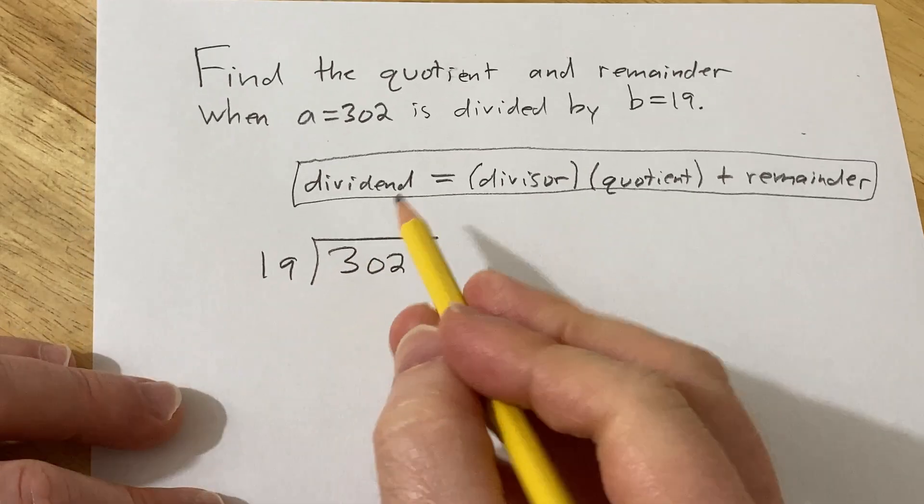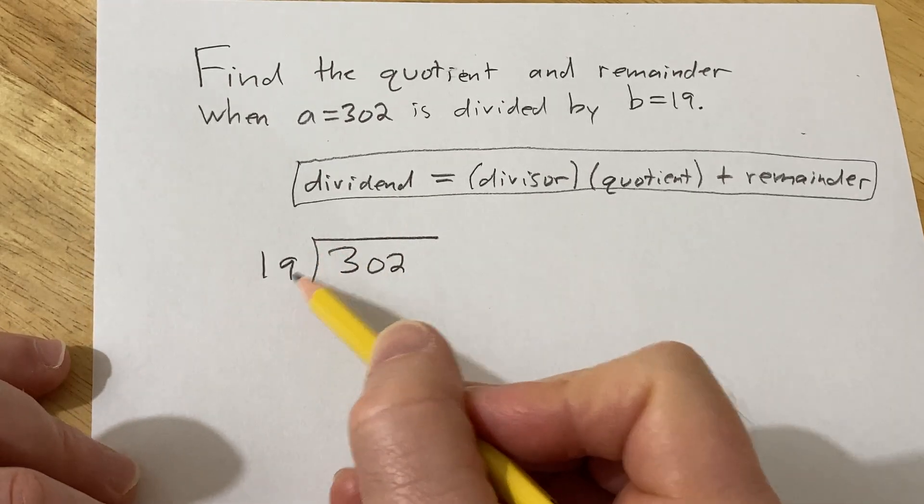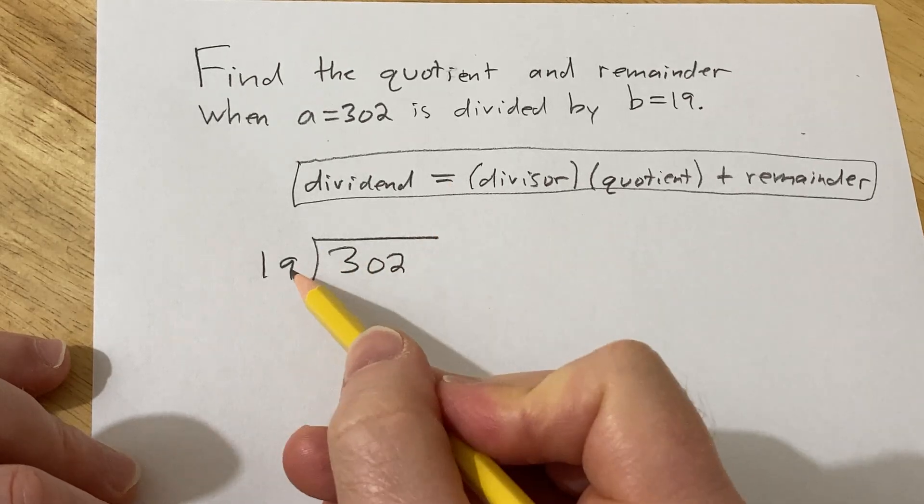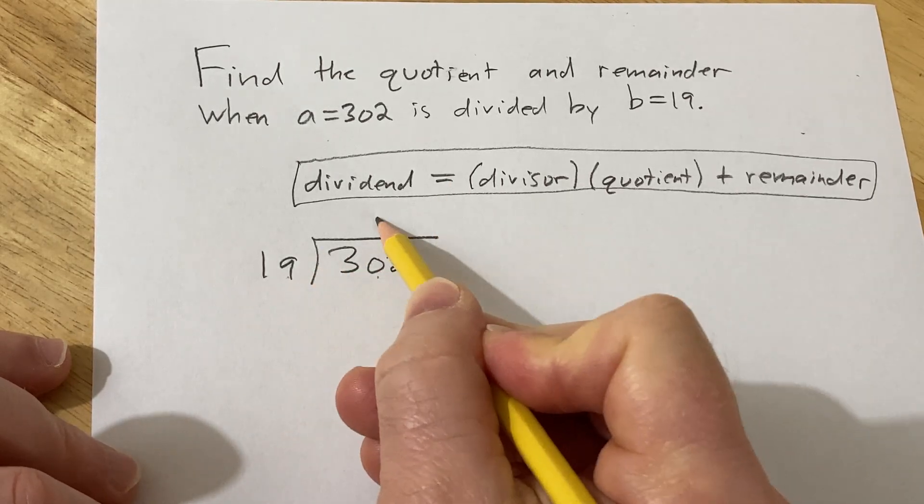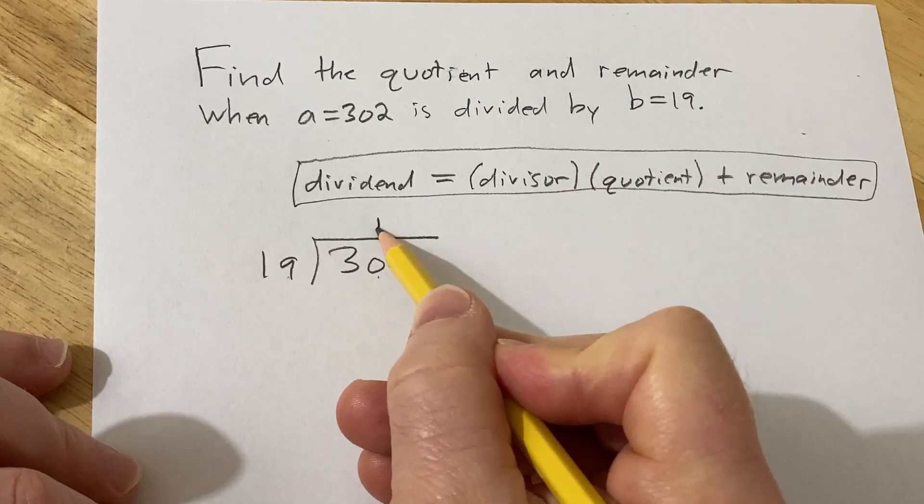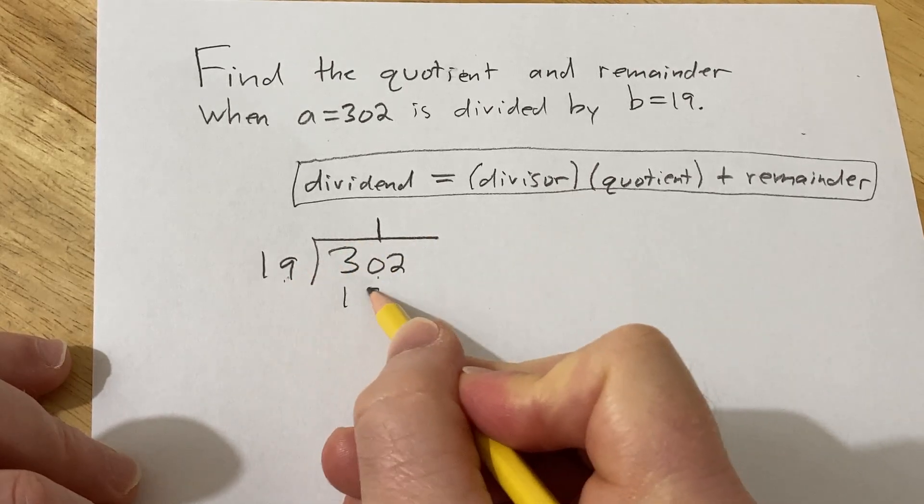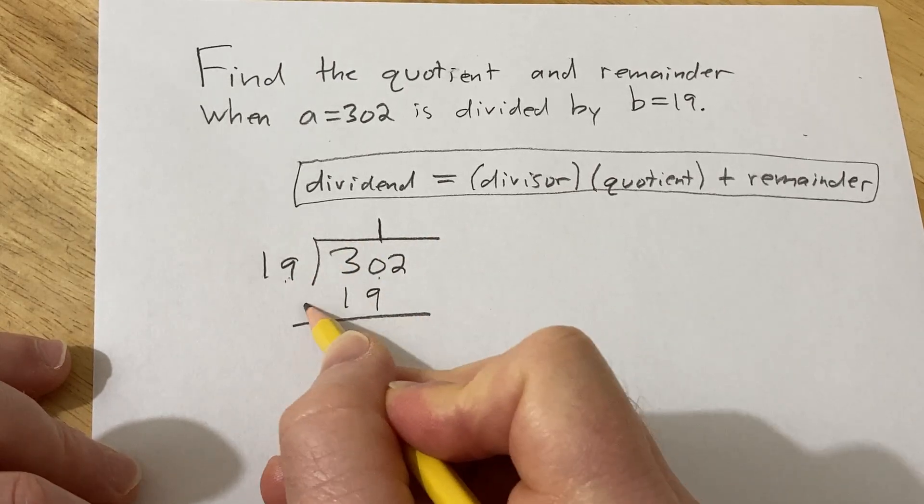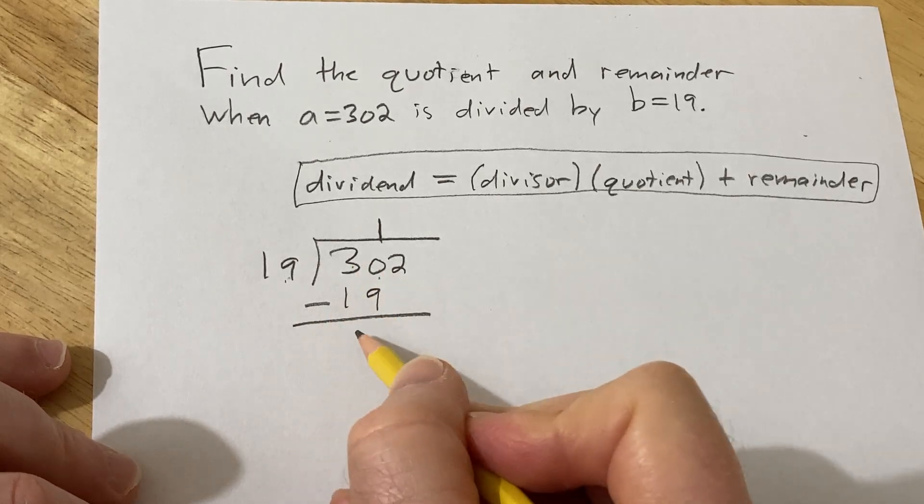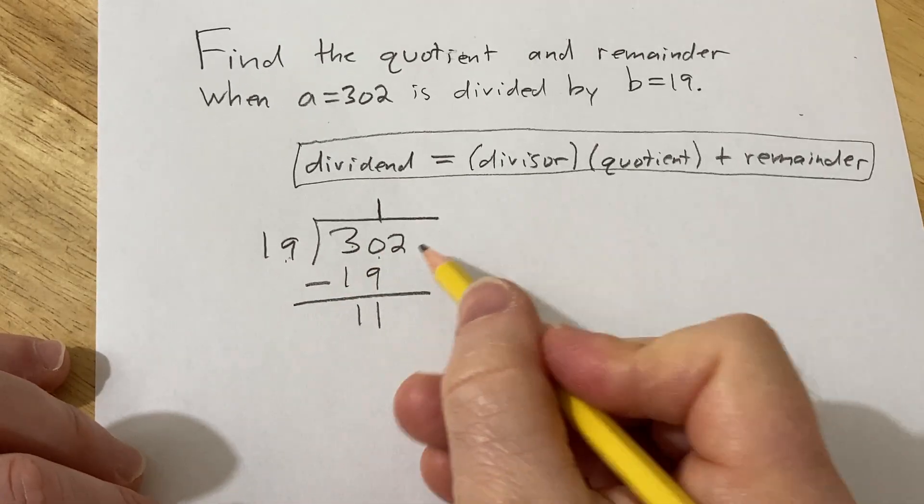We ask ourselves, how many times does 19 go into 302? Well, 19 goes into 30 once, so we put a 1 here, and then 1 times 19 is 19. Draw a line, subtract. 30 minus 19 is 11, and then we bring down the 2.